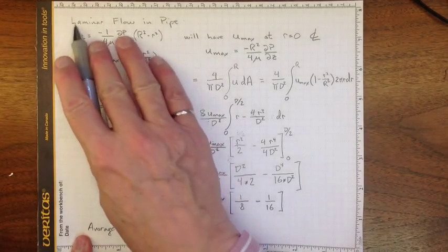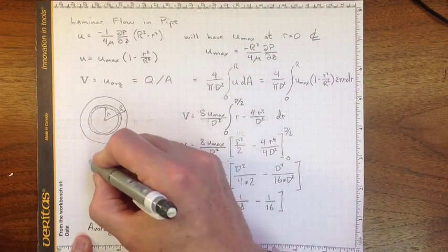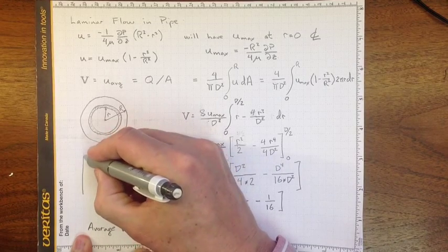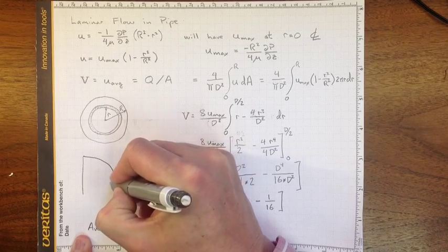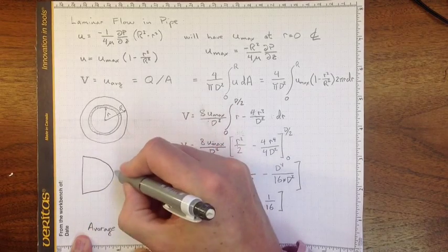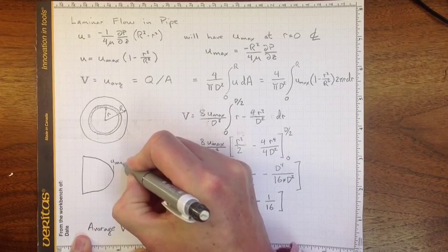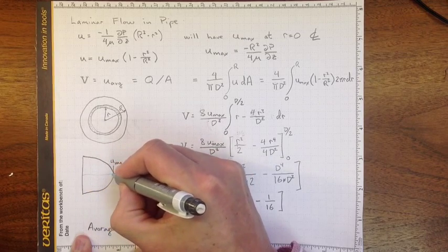Now if we examine this laminar flow in a pipe and we look at our velocity cross-section, our profile is parabolic like this,